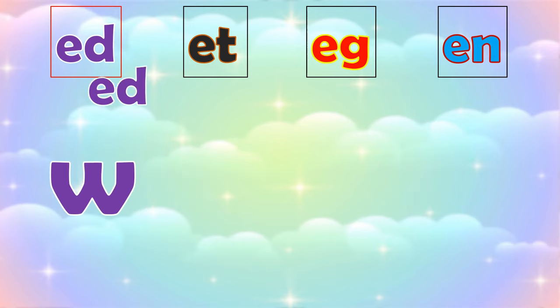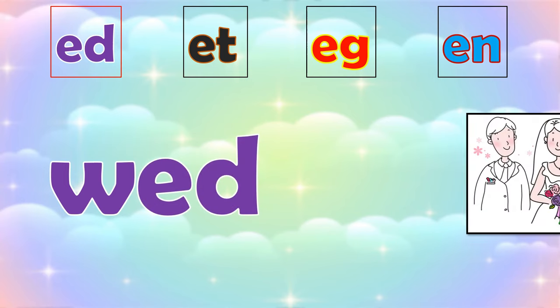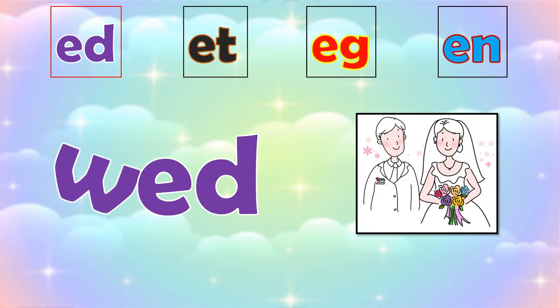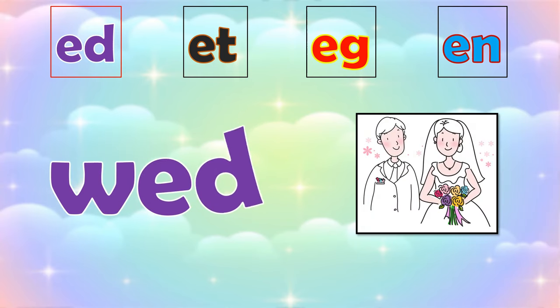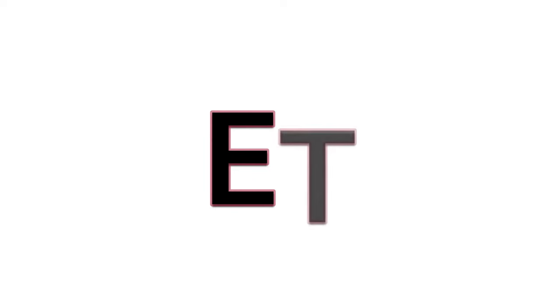W, ed — wed. W, e, d — wed. Now the -et word family.